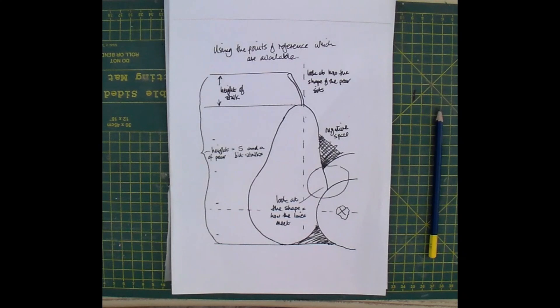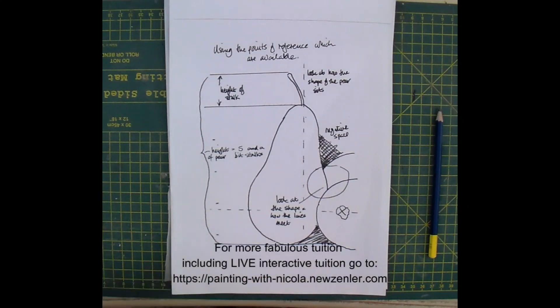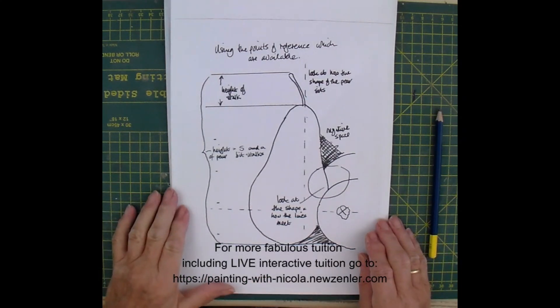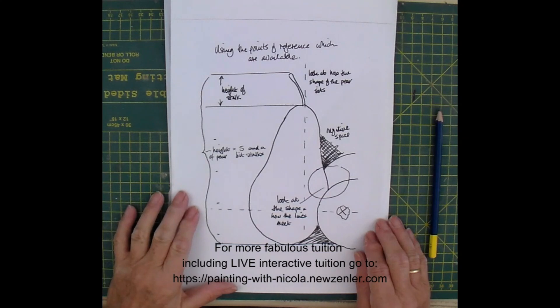So just a few very simple rules to help you placing subjects, checking how far apart they are and checking your angles just to make it a little bit easier. I hope that helps.